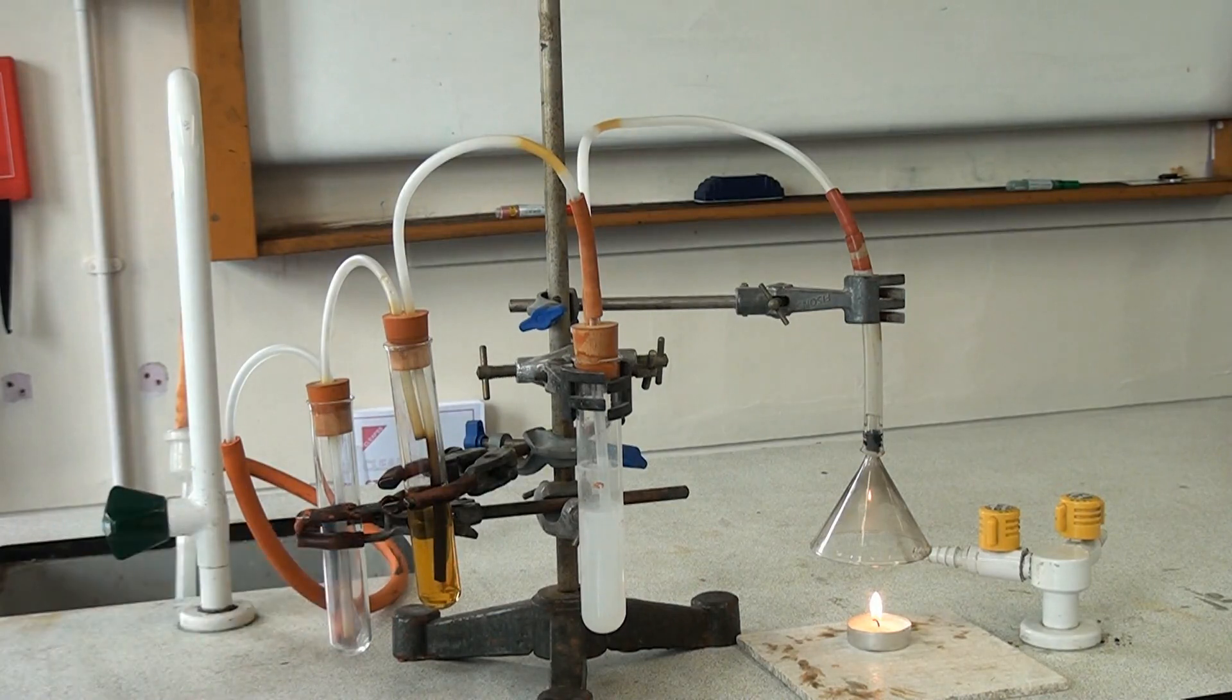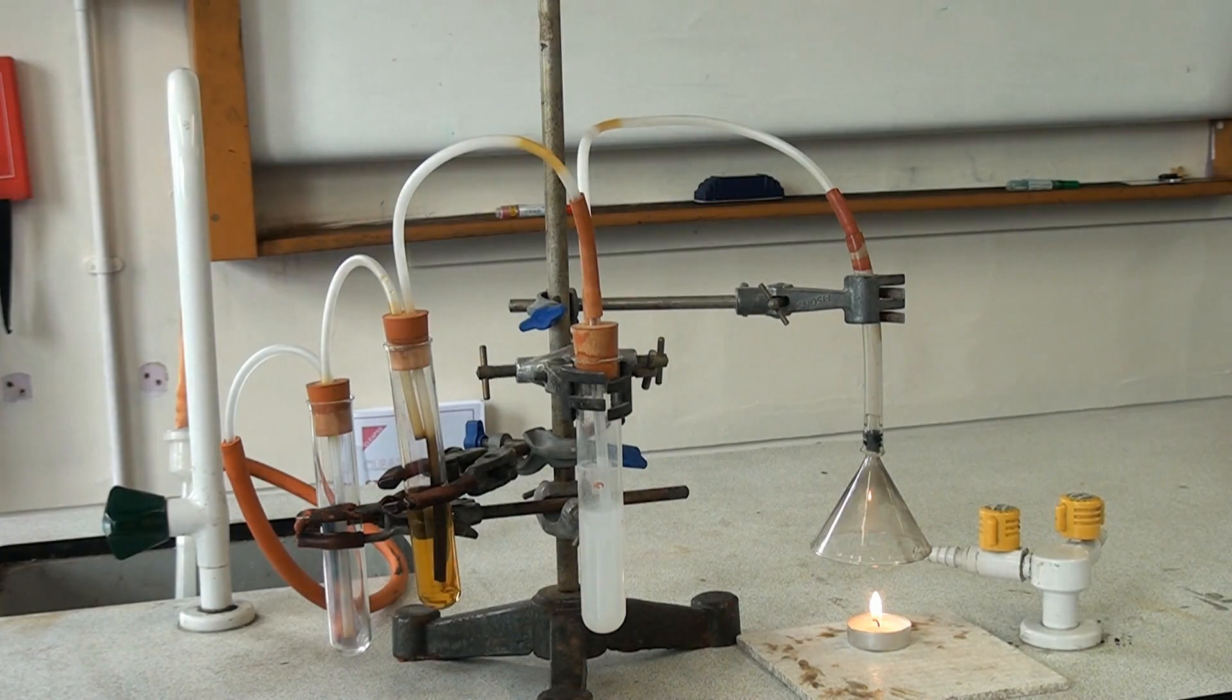The second tube, the universal indicator that started off green has turned a yellowy orange and that shows that something acidic has been made.